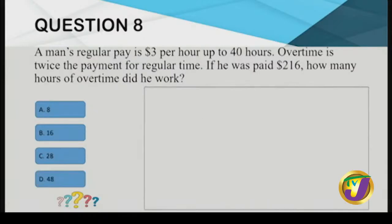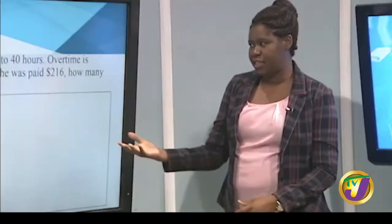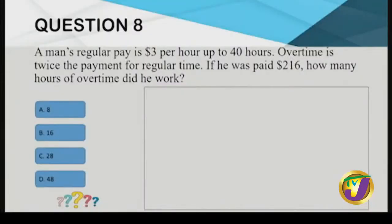Question eight: a man's regular pay is $3 per hour for up to 40 hours. Overtime is twice the regular rate. If he was paid $216 in total, how many hours of overtime did he work? This person is hourly paid; a regular working week is 40 hours at $3 per hour. Overtime is any hour beyond 40.